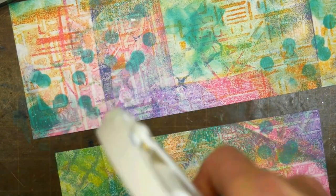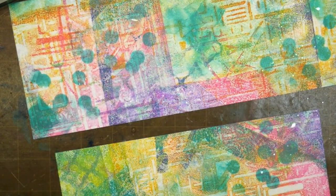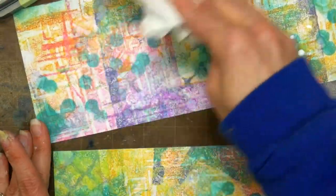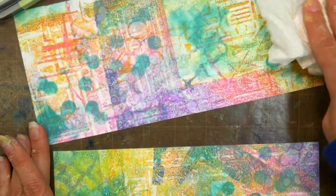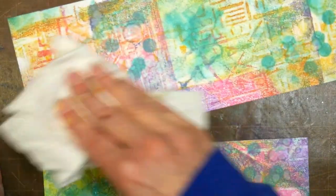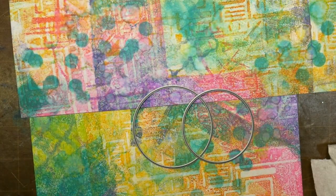Now all we need to do is spritz on a little water. Again, we're going to get that kind of bleached out effect and beautiful texture that Distress Oxide inks is known for. Let it sit a bit and then blot off any of that water so you get that little batiki bleach look.